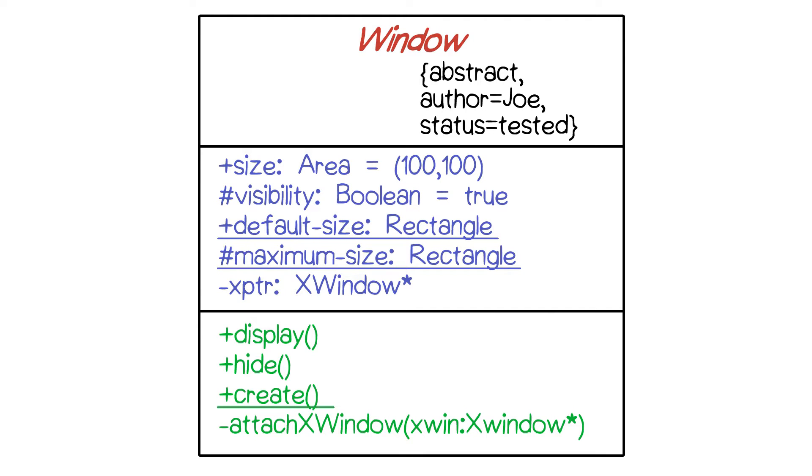Returning once again to our window diagram, now let's look at the third compartment. This is the one for operations. Once again, there's optional visibility using the same symbols we had before. There's the name. There may be a return type if the operation returns some value. It's not shown in these particular examples.